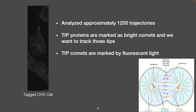My project involved working with a Chinese hamster ovary cell, which is used often to test different biochemical processes — such as being a target for cancer drugs. In this video, what we're tracking is the tips, the end-binding proteins, essentially.